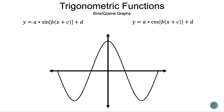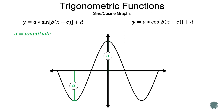Now let's take a look at our model and see how the numbers affect the graph depending on where the number is. First, let's look at A, or the amplitude. The amplitude is the height from the middle point to either the peak or trough, or the distance from the highest point to the lowest point divided by two. It might be a little easier to find the amplitude at the minimum or an extrema.